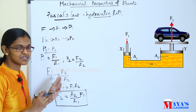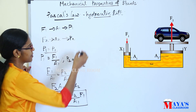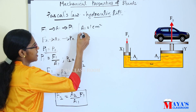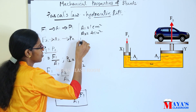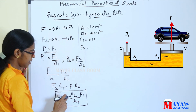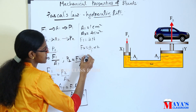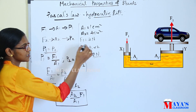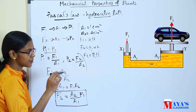This is the practical application of Pascal's law — the hydraulic lift. For example, if A1 is 1 centimeter square and A2 is 4 centimeters square, and force F1 is 2 newtons, then F2 equals 8 newtons.